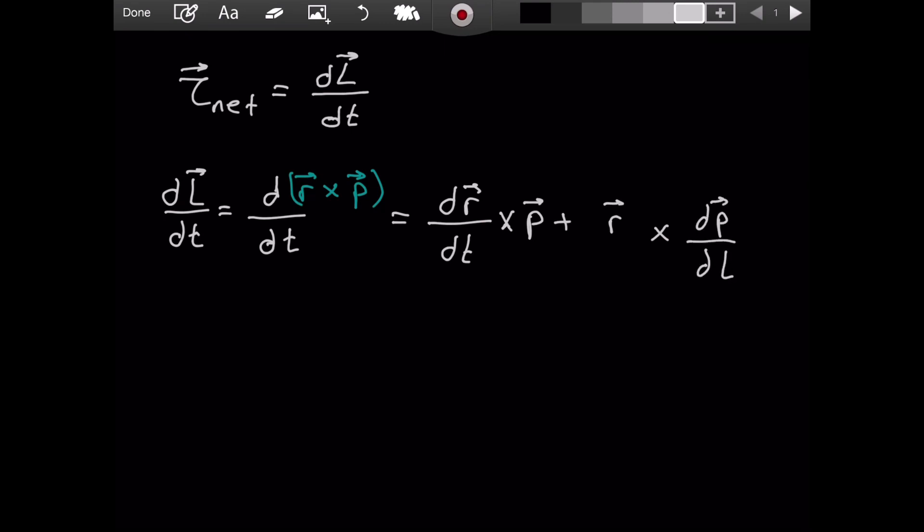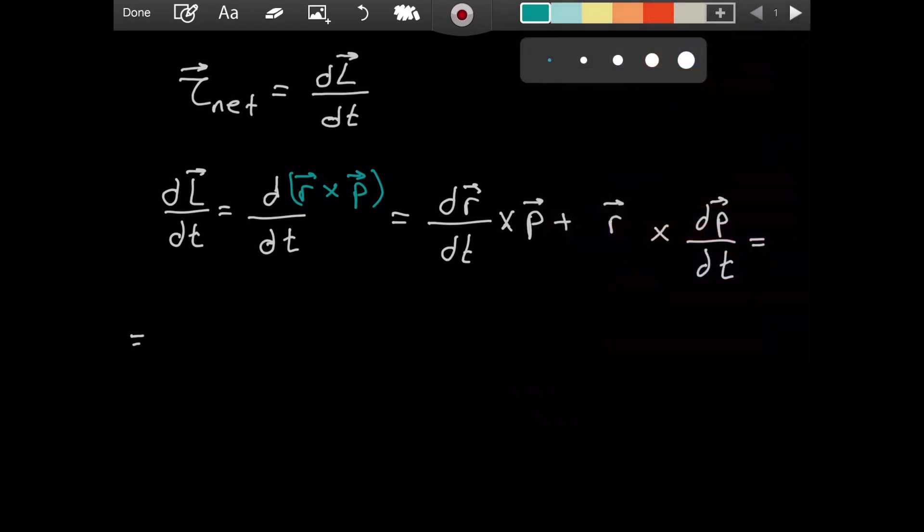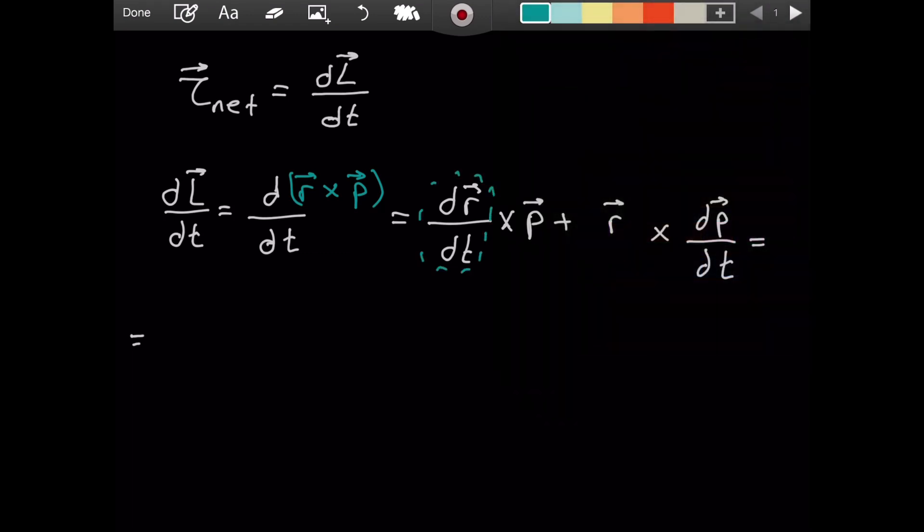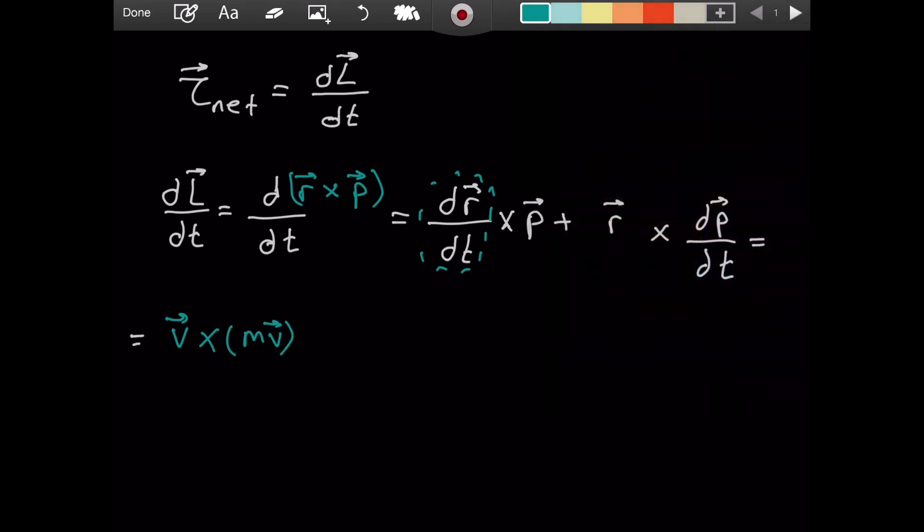I hope this part makes sense. So we have this, and now this is going to equal... Let's consider the first term. What is this derivative, the time derivative of the radius, the position? That is, by definition, the velocity vector, v, cross what is linear momentum? By definition, it is mass times the velocity. Then we have plus...